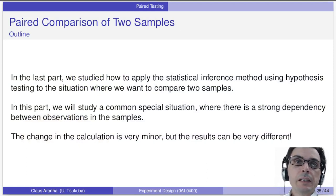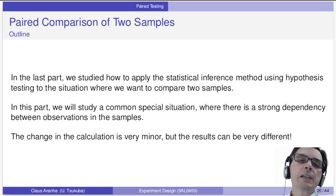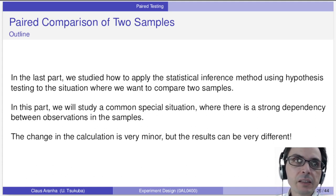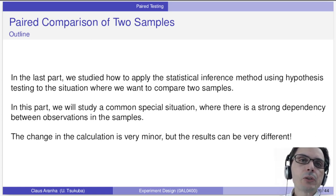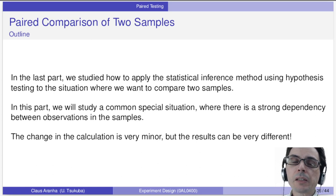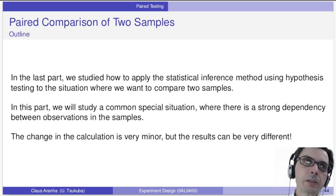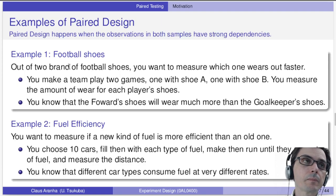In the last video I mentioned how you modify the statistical inference test to compare two samples. In this part I want to study a special situation that is quite common: where there is a strong dependency between observations across samples. The mathematical change is pretty minor but the results can be very different, so it's important to learn how to identify situations where we have paired comparisons.